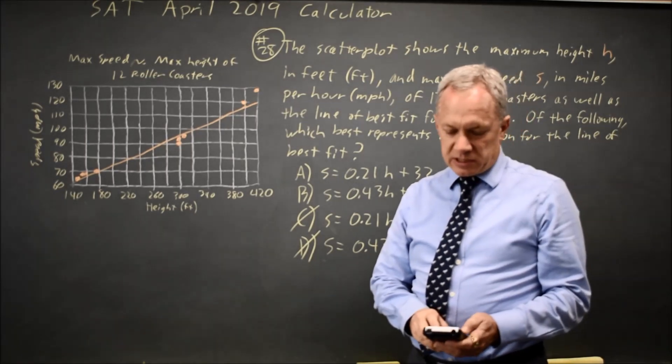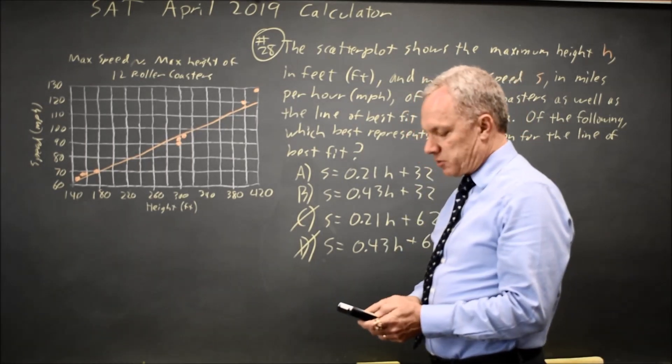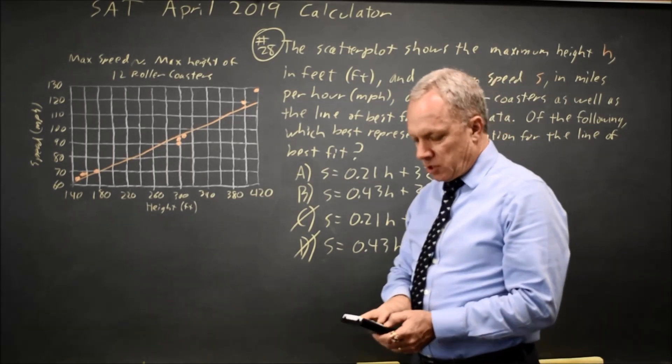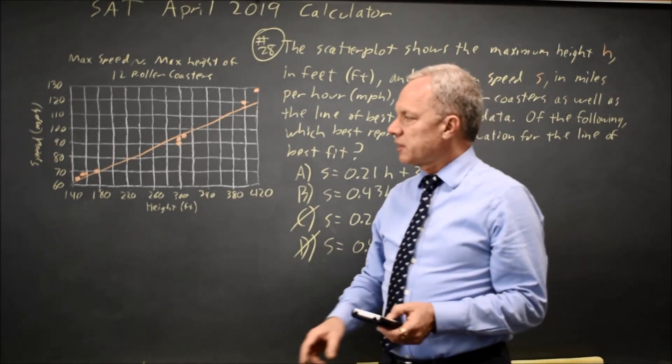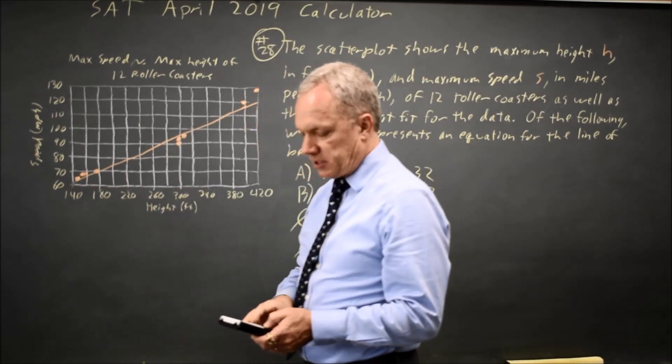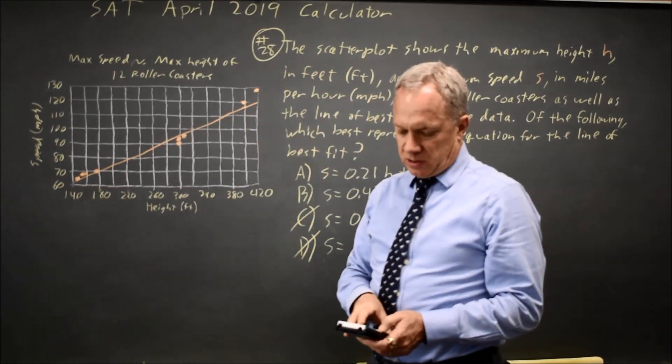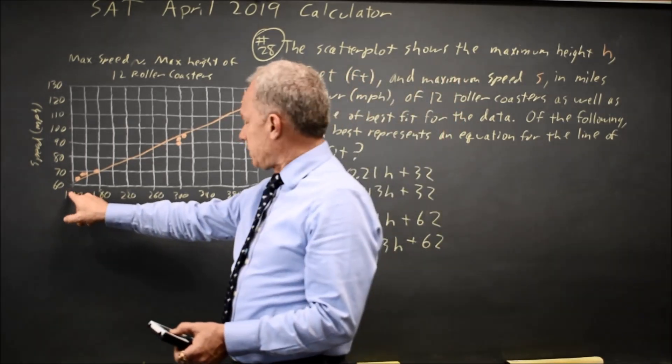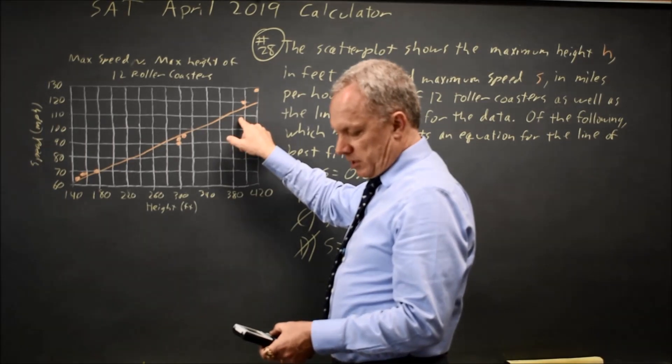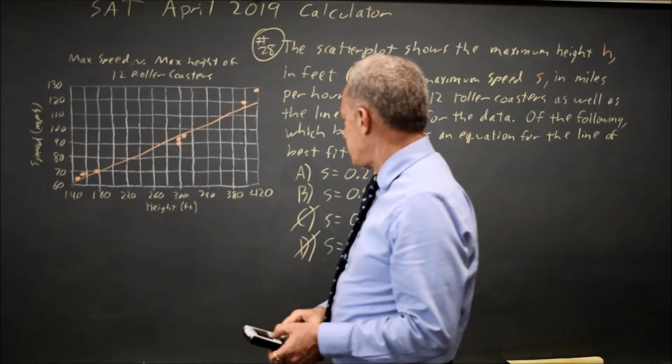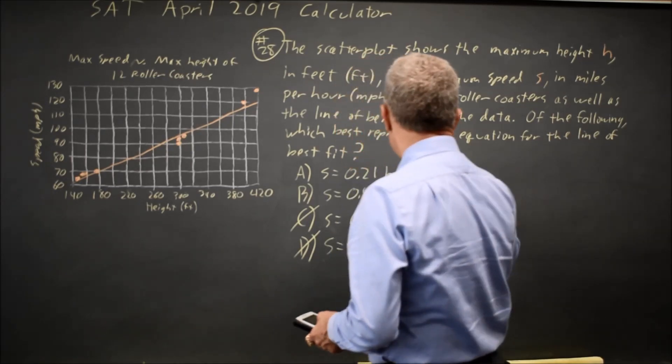I would go to y equals and just put choice A into my calculator, 0.21x plus 32. Second window for table set, I'm going to start at 140 and go up by 40 so I can see the points that are actually on the graph. And that starts at 61 and ends, well, the last number I can see is 112 at 380, which is very close to the right answer. So I'm tempted to say it's A.